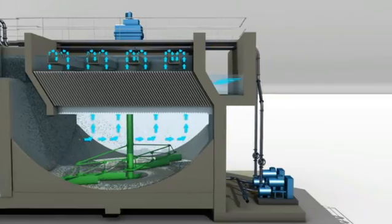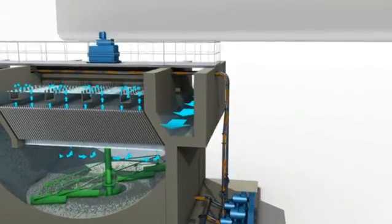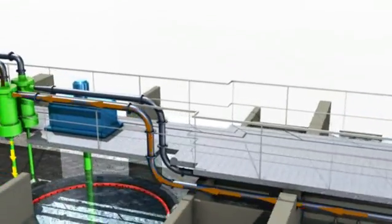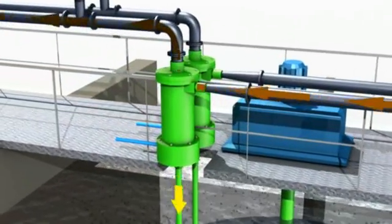The microsand sludge slurry is scraped to the central pit of the settling tank, from which it is withdrawn with the help of a rubber-lined centrifugal pump and sent to a hydrocyclone.